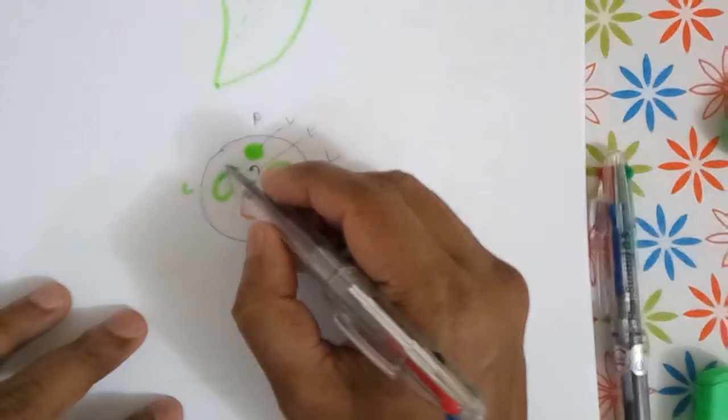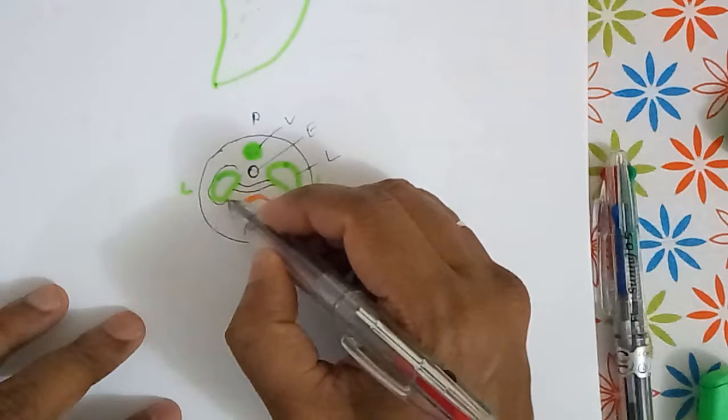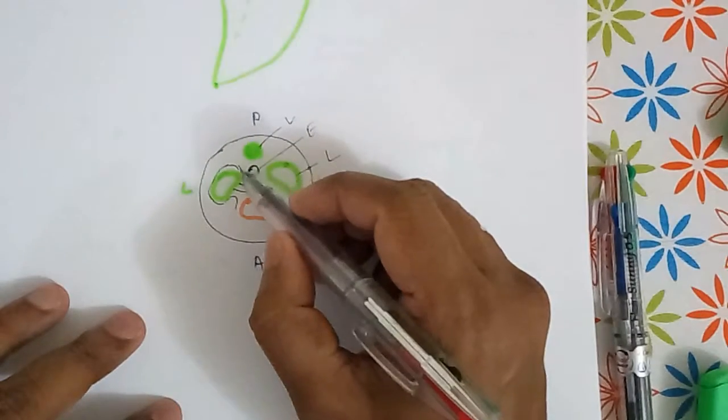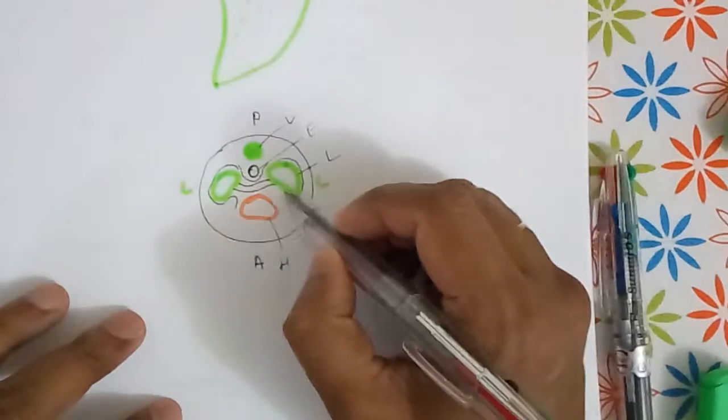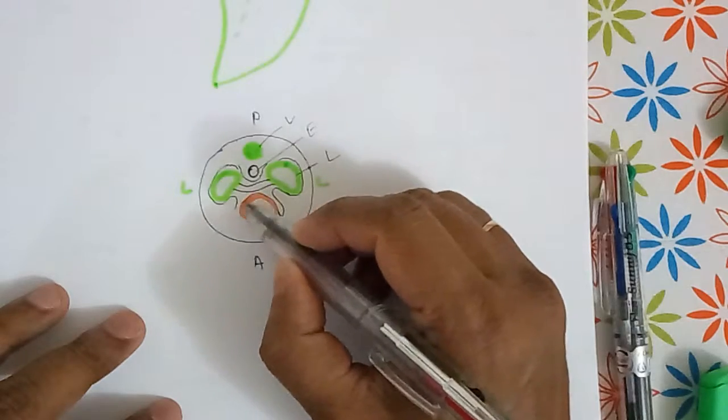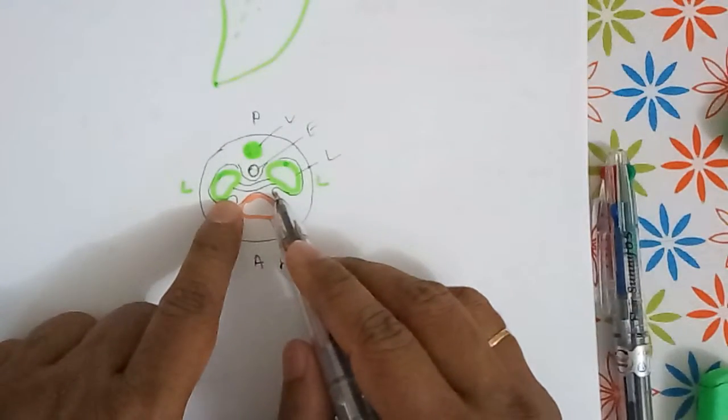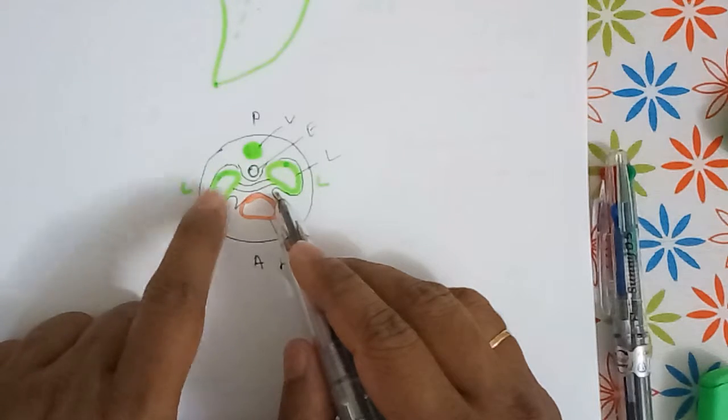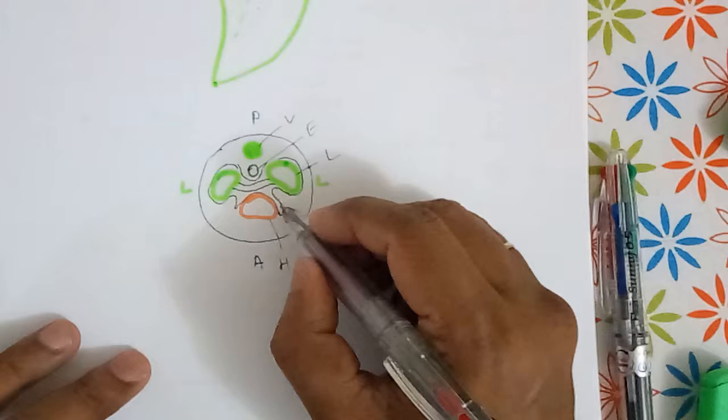This space is having a fold of pleura and peritoneal covering. This fold is nothing but the mesenchyme or mesoderm which is surrounding around the developing lung and heart.